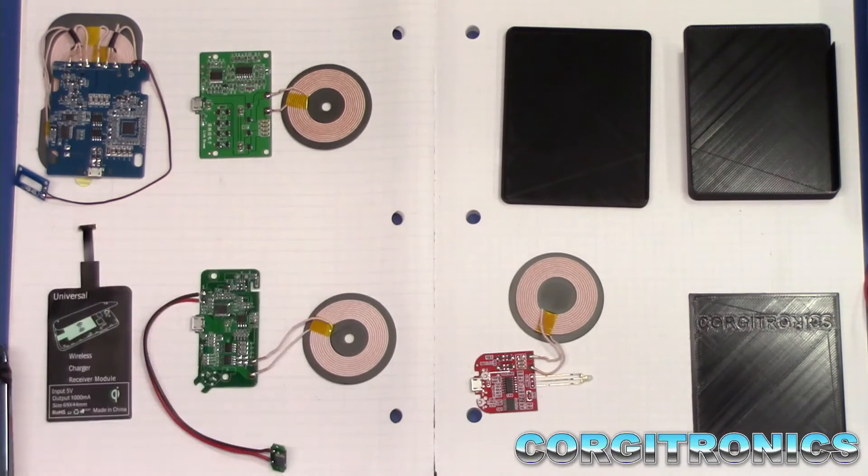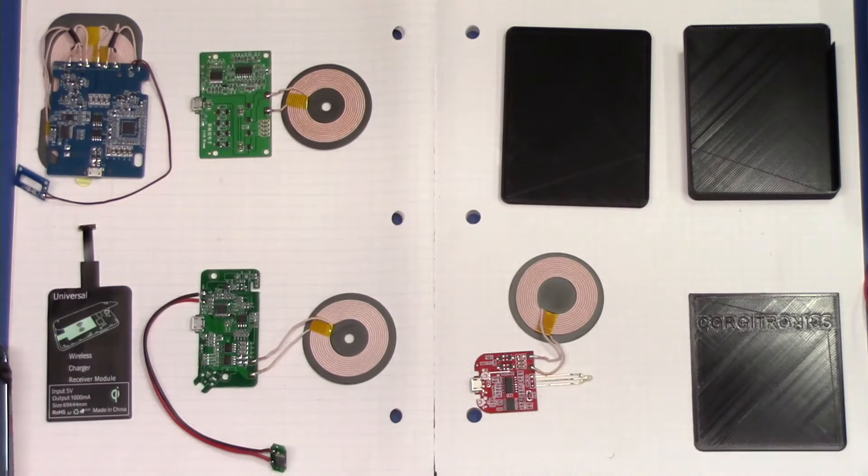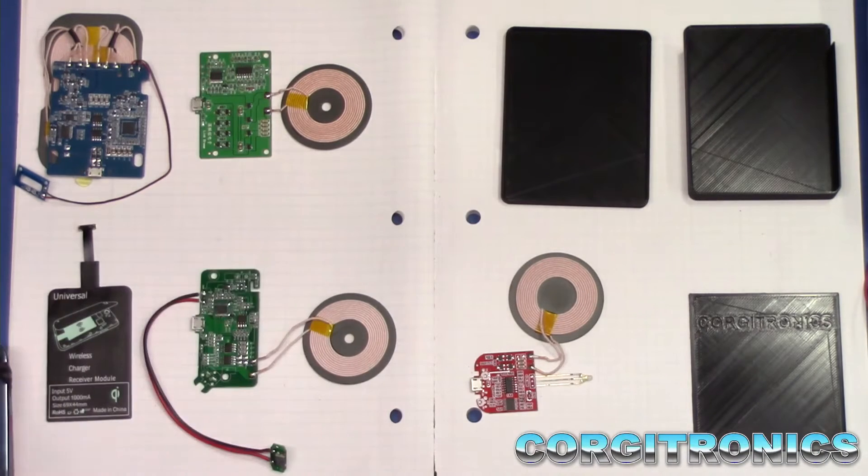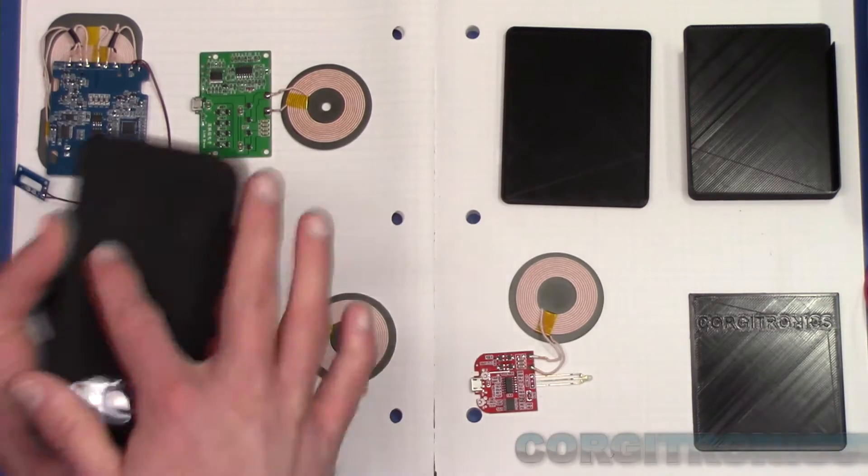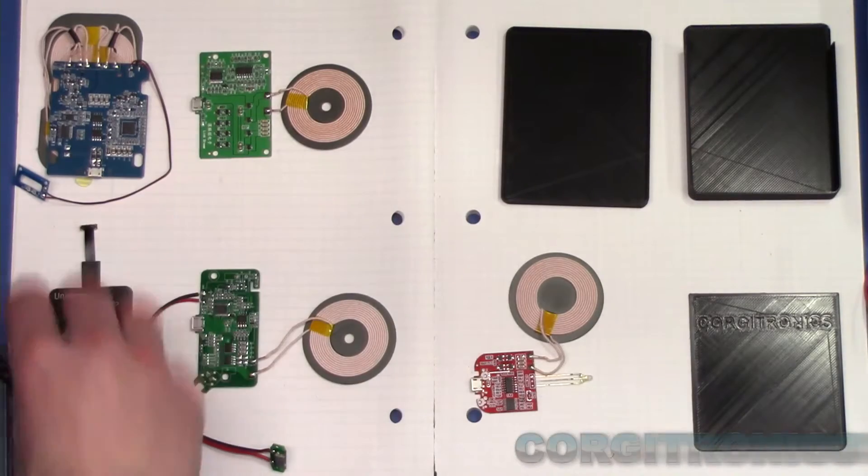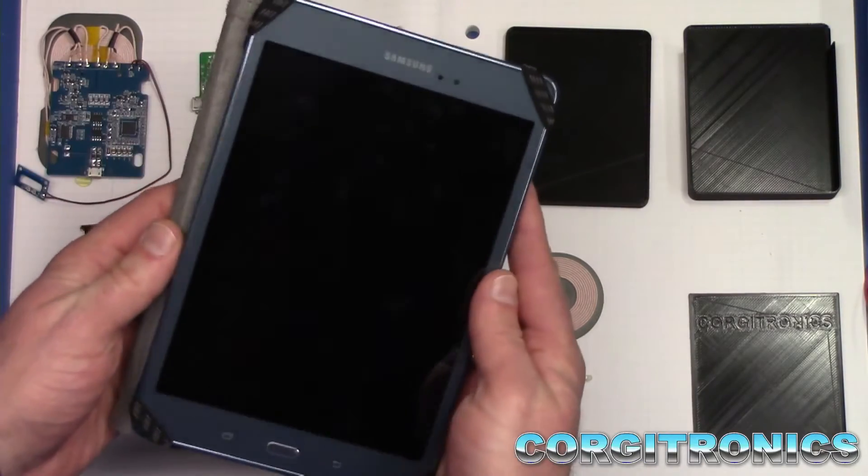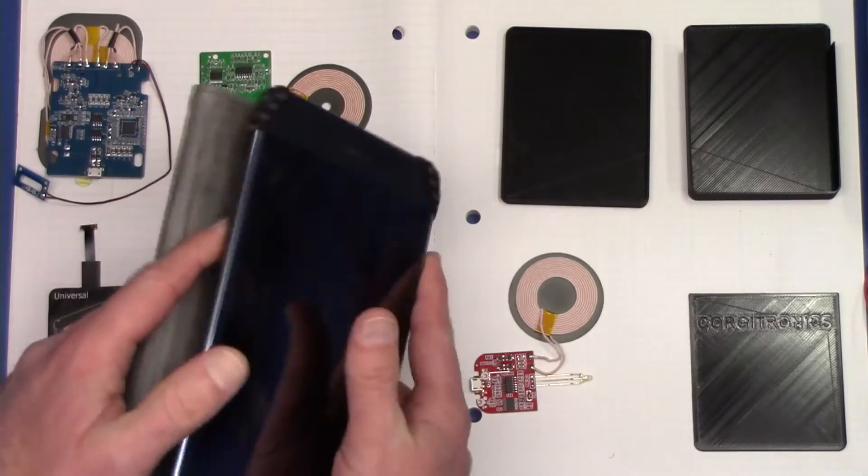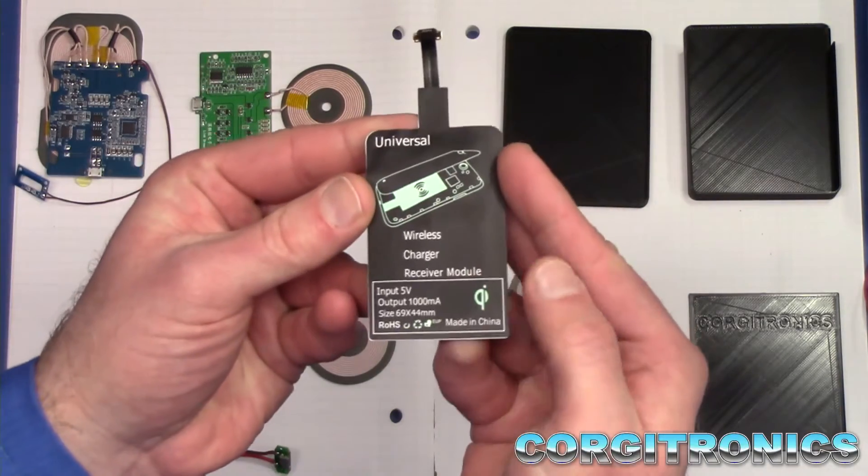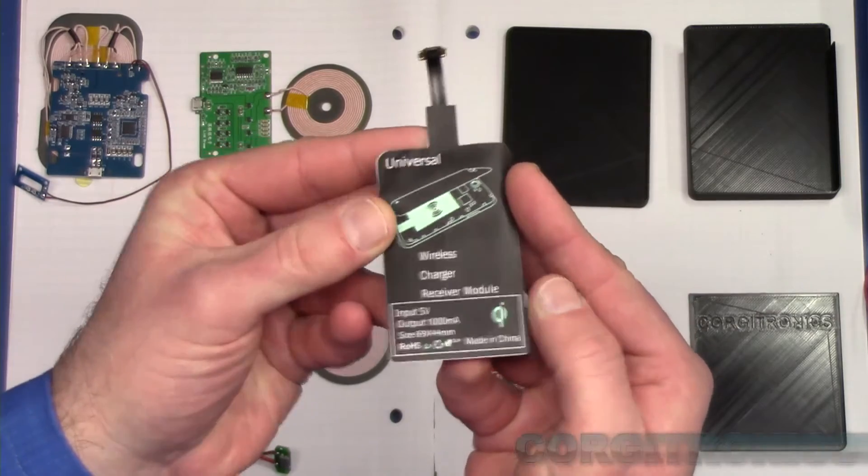And now, if you have a newer phone like this, what is this, an S7 from Samsung, you'll have that charging receiver built into the back of the case. However, if you have some other device like this tablet that does not have it built in,